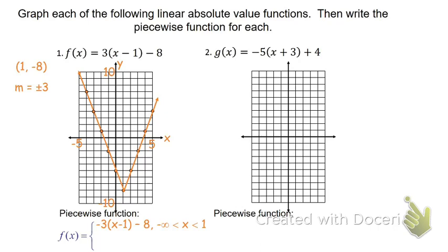The other side has a positive 3 slope, so instead of negative 3 we write positive 3 times the quantity x minus 1, minus 8, from the turning point 1 to infinity.